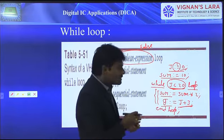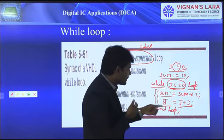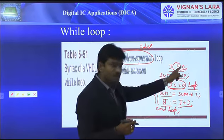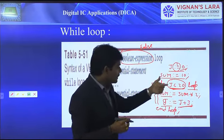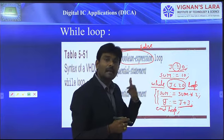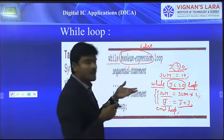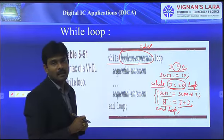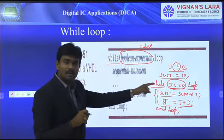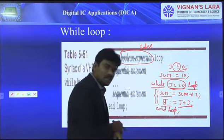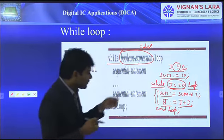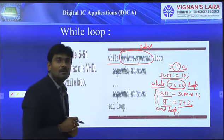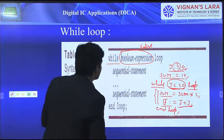After the first iteration j is 3, still less than 20, so the loop executes again and j becomes 6. The loop keeps repeating: j goes 0, 3, 6, 9, 12, 15, 18, then 21. Once j reaches 21, which is greater than or equal to 20, the boolean expression becomes false and the while loop terminates. The loop executes a total of 7 times.